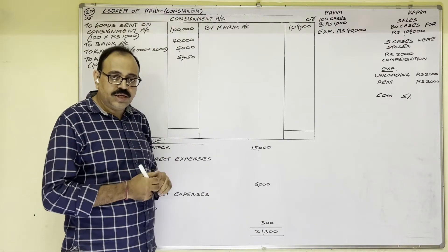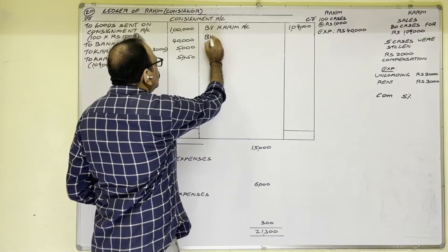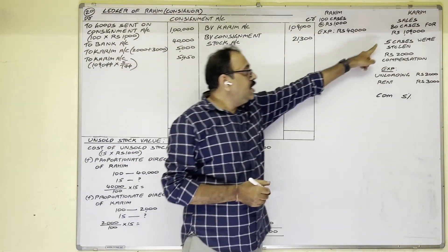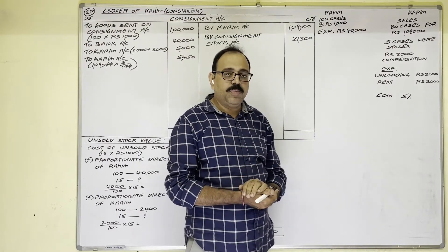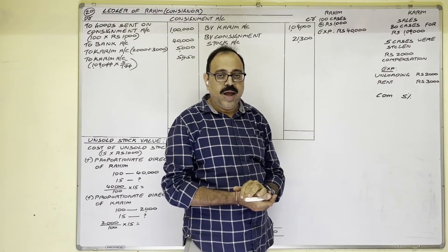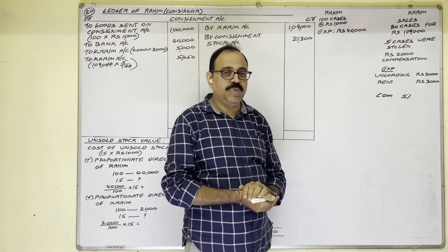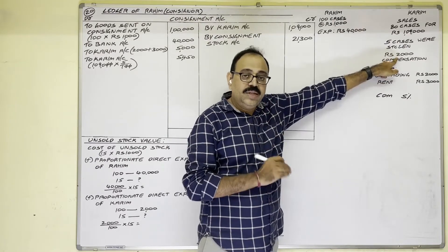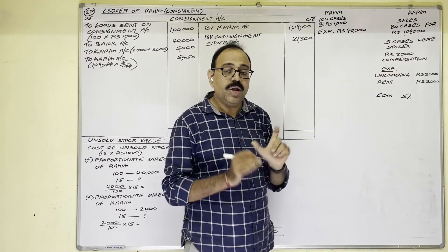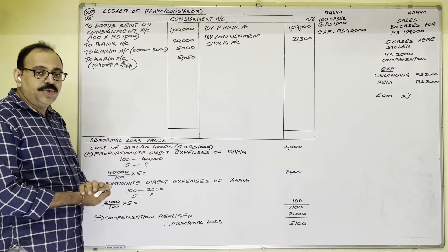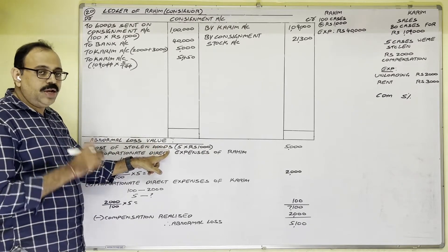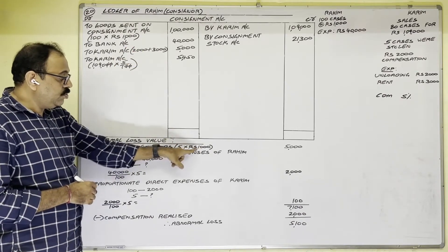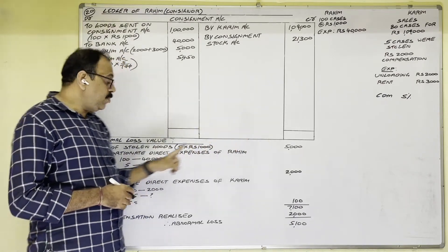Finally, we come to the abnormal loss calculation. The five stolen cases are to be treated as abnormal loss. A new point here: there is no insurance, and the compensation is coming from the employee. Let us calculate the abnormal loss value. Cost of stolen goods: 5 cases into ₹1,000 per case equals ₹5,000.